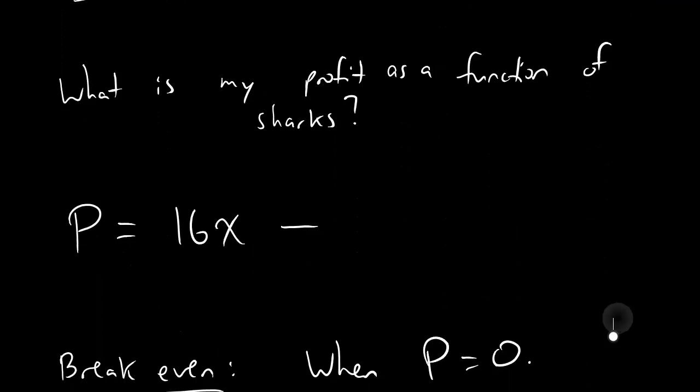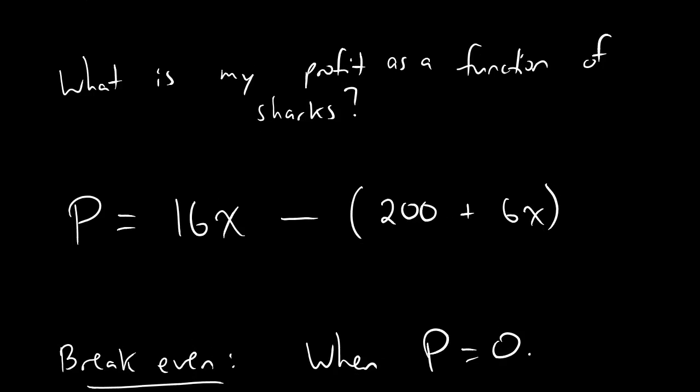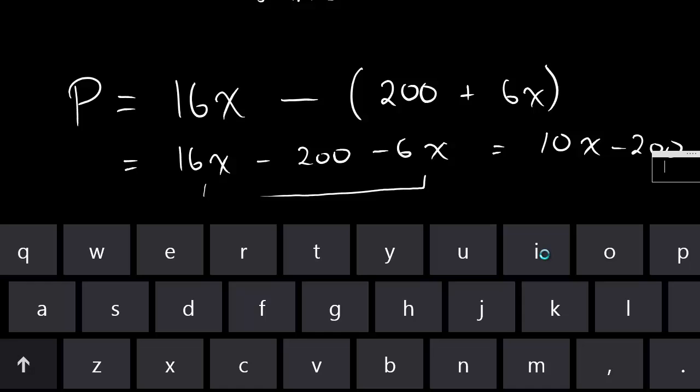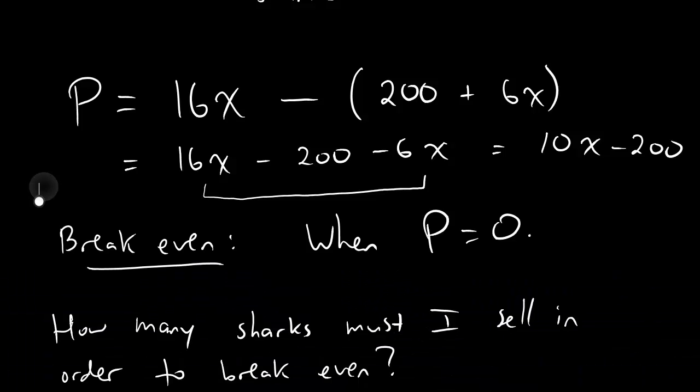And so we're subtracting, we are subtracting 200 plus 6x. When you do that, you got to make sure to put those puppies inside parentheses. We're subtracting all of 200 plus 6x. We're subtracting that all at once. And so if we're going to simplify that, that's going to be 16x. The minus sign distributes, so that's minus 200 minus 6x. And now the last thing we do is we combine 16x minus 6x. 16 minus 6 is 10, so we get 10x, and we still have minus 200.